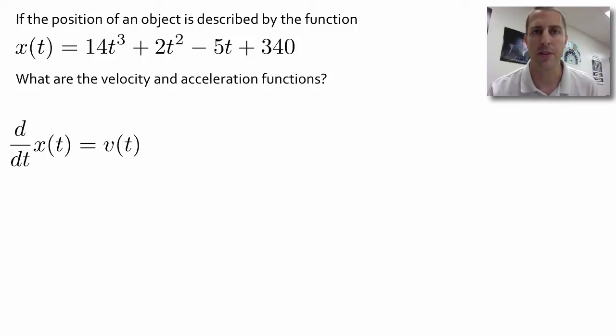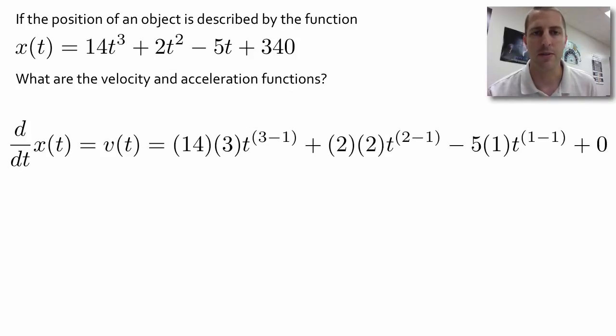14t³ is one term. We're going to find the derivative of that term, then add the derivative of the next term, and keep going until we get through all of them. The derivative of 14t³ is 14 times 3t^(3-1). We're following that rule on the previous page. Do the same for the next term, 2t². Derivative of that is 2 times 2t^(2-1). Keep doing that all the way through. Then we simplify and we have our velocity function.